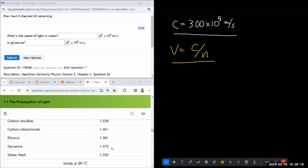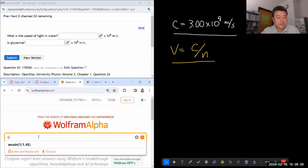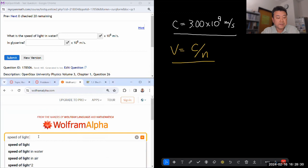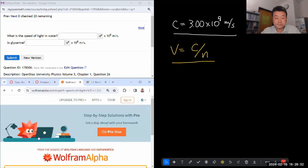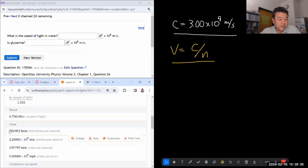So for water, we would say this is the index of refraction. So using that, we say speed of light in water is c, or speed of light, divided by this number, and we get 10 to the 8 meters per second.